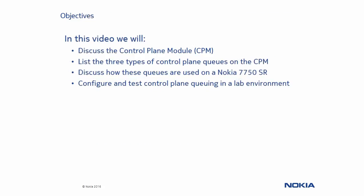We will discuss the three different types of control plane queues and how they are used on the Nokia 7750 service router. Finally, we will configure and test this in a lab environment.